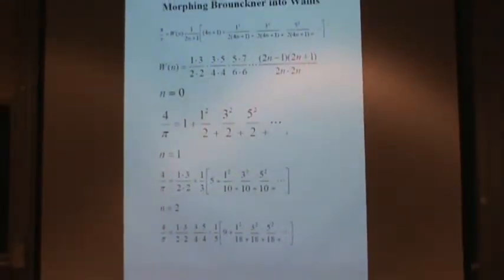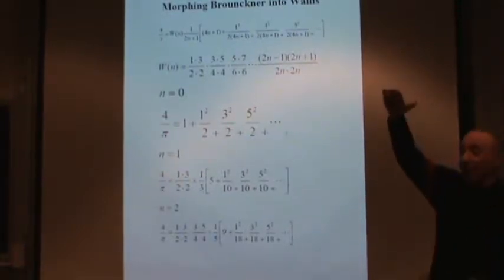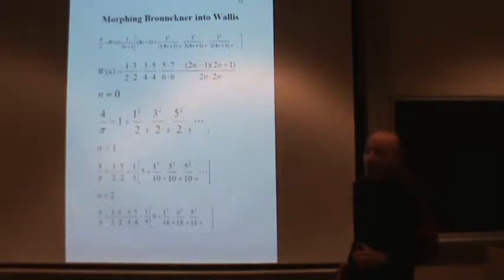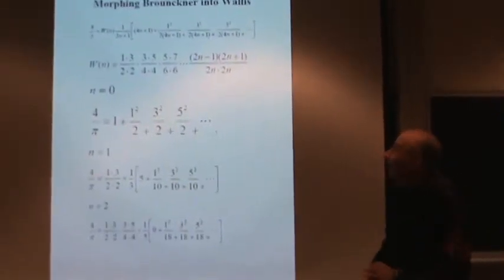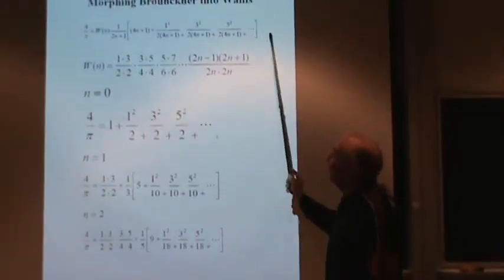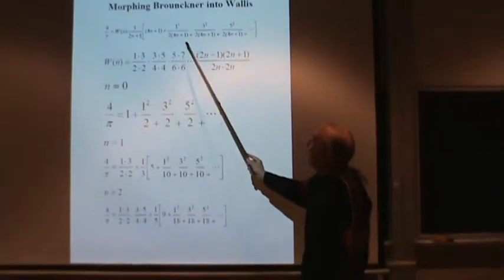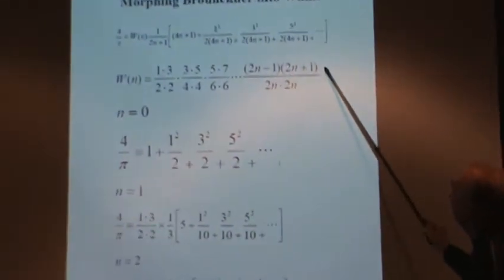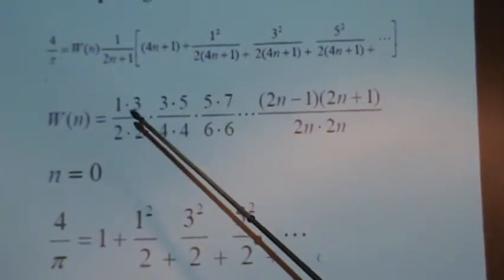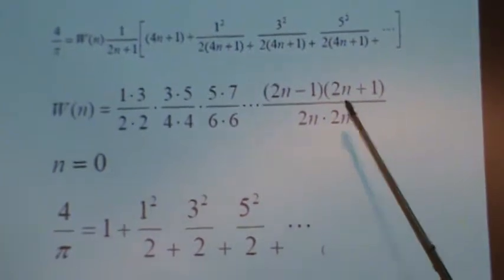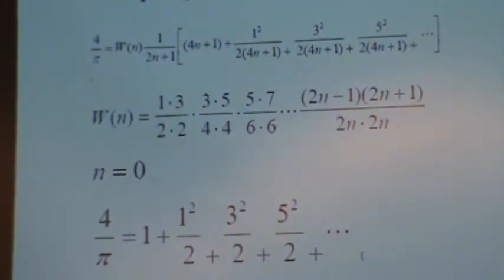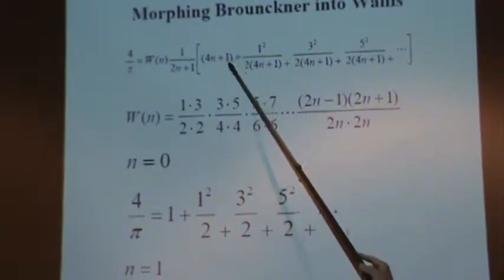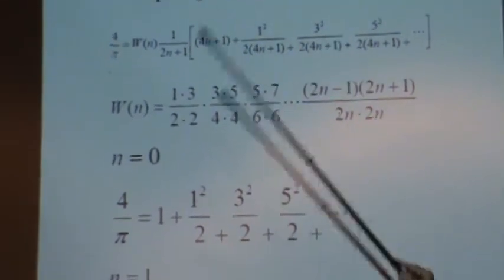Now here's another morphing. A few minutes ago I started with Wallace and I morphed it into Vieta. Now I'm going to start with Brouncker and I'm going to morph it into Wallace. And here's the formula that does it. Simple formula, and again it has a parameter in. And half of it is the partial product from Wallace. This is the first factor in Wallace, the second, third, out to the end. So this gives you the partial product from Wallace. And then you have this continued fraction which is of the Brouncker type. So you've got a parameter in there, n. So here we go, here we'll do the morphing.